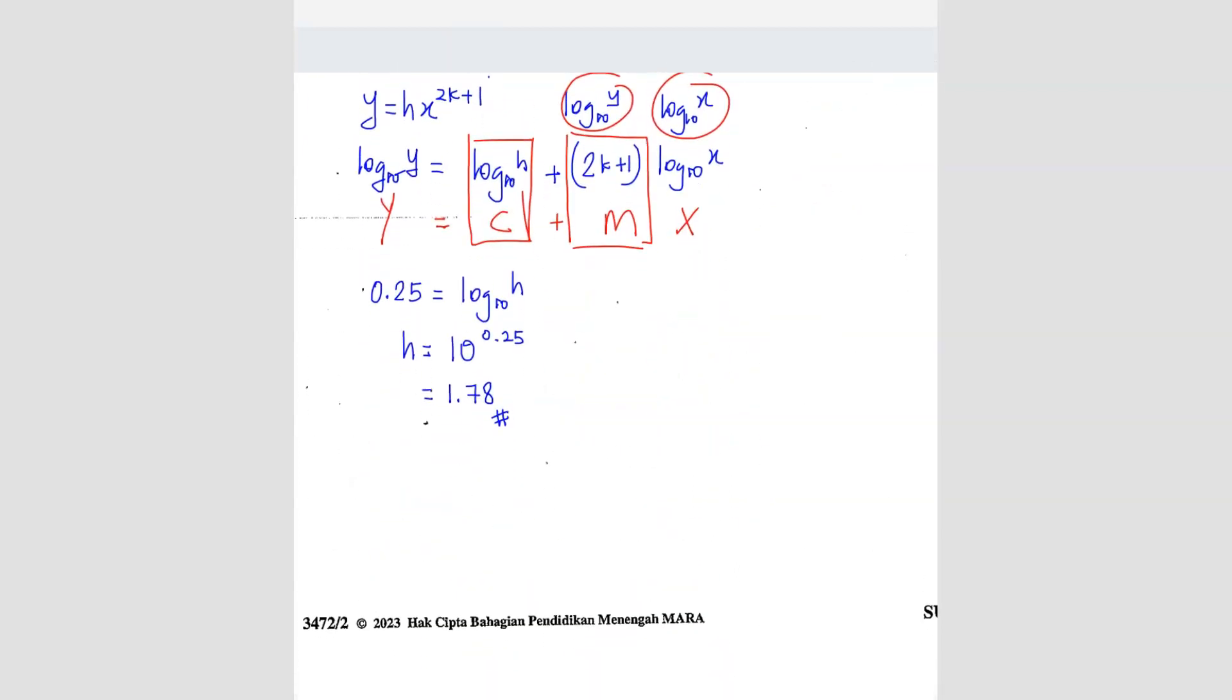So we have m, which is the gradient. So it's 2.6 minus 1 over 2.2. Sorry, it's not 2.6. y2 minus y1. So this is 2.2 minus 1. So this is the x value, right? This is the y value. Equals to, we found here is what? 2k plus 1.